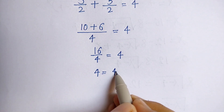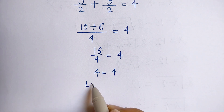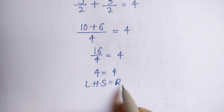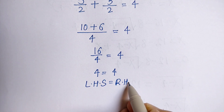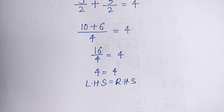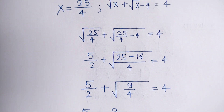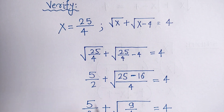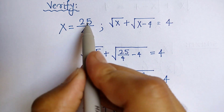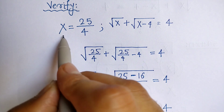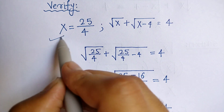Therefore left-hand side is equal to right-hand side, and from this we can say that x is equal to 25 upon 4 is the correct answer.